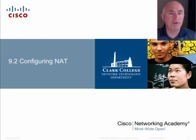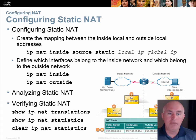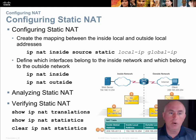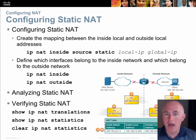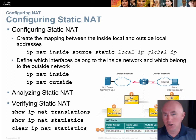Let's look at configuring NAT. Static NAT is pretty simple — it's essentially one command to configure it. We configure it by creating a mapping using the command: IP NAT inside source static. Then you provide the inside local address and the inside global address — that's your one-to-one mapping.